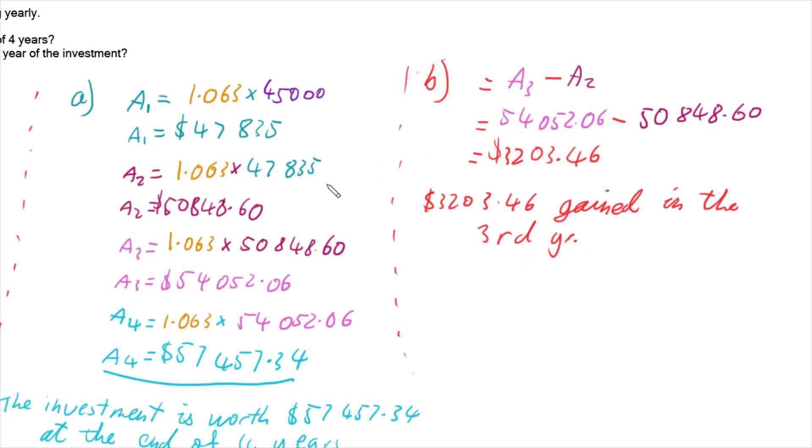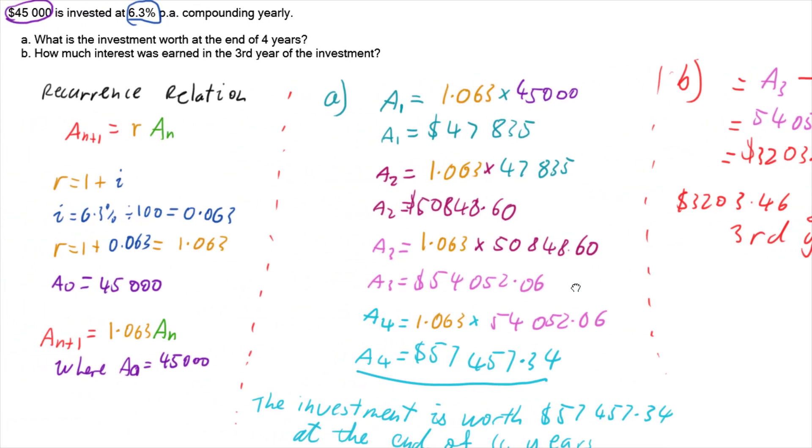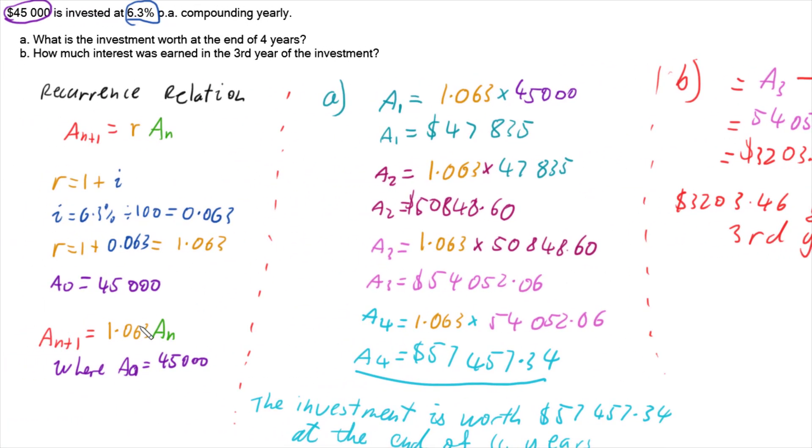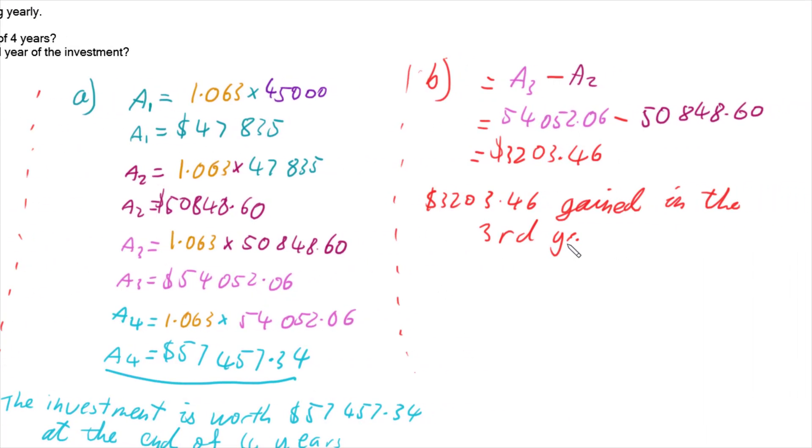And we're done. So we can use our recurrence relation to help us work out questions based on how much we can have at the end of an investment or part way through the investment, working out each term as we go, as well as how much was gained in a particular term, or in this case, a year.